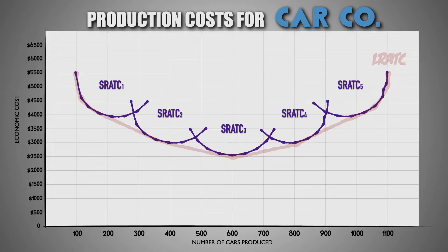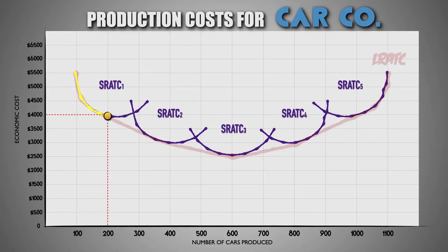For example, as the firm opens its first factory, the average total cost per car is initially high. With only one plant in operation, the firm's low capacity to produce cars hinders its ability to utilize mass production techniques. However, as the firm continues to hire workers and rent capital equipment, it will begin to experience increasing returns as workers specialize in their tasks and utilize equipment, enabling mass production to take place and causing the total cost per car to decrease as the firm scales its production level. However, if the firm remains at a plant capacity of one factory, it will eventually experience diminishing returns as additional workers and equipment crowd the factory and hinder production.